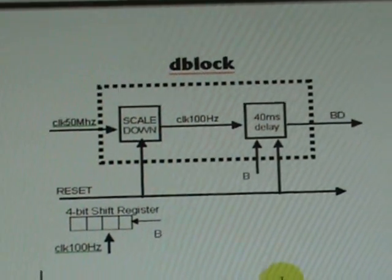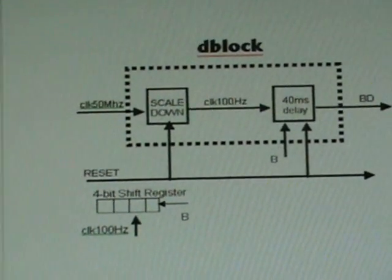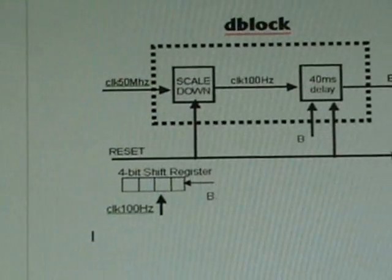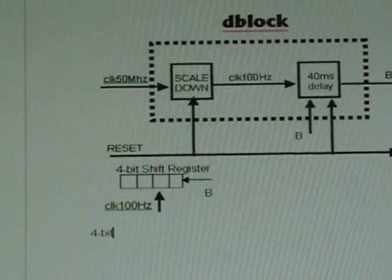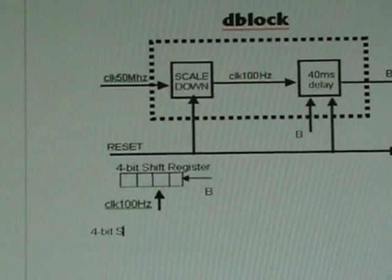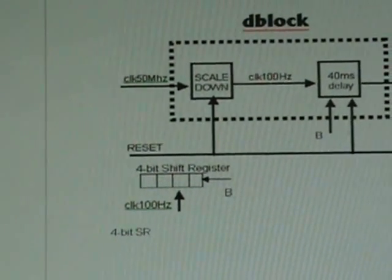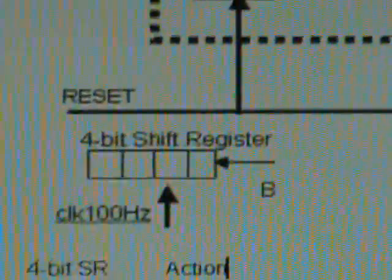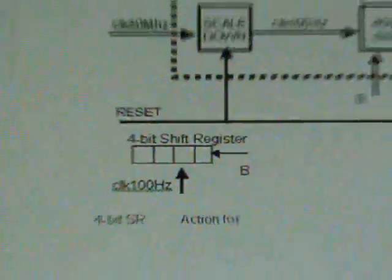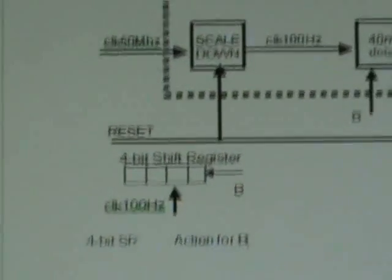Basically, it looks like as follows. Here we have the four-bit shift register and the required action to be taken for generating the debounce signal.